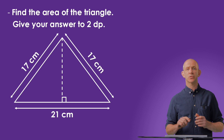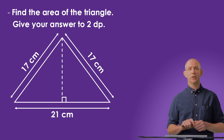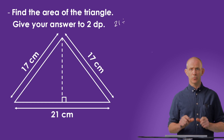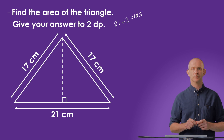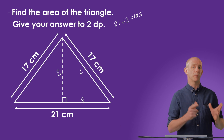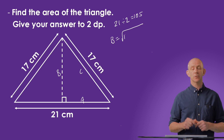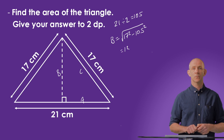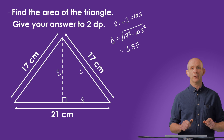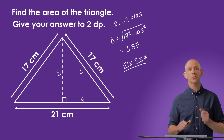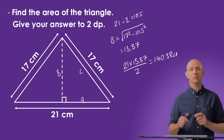Here we're asked to find the area of an isosceles triangle. As it's an isosceles triangle, I can use Pythagoras to calculate the height by halving the base to create a right-angled triangle with the height being on the B side. After substituting in for the variables and rearranging the formula, the height equals the square root of 17 squared minus 10.5 squared, which gives us 13.37. We can then put this into our area formula to get 21 times 13.37 divided by 2, which equals 140.38 centimetres squared.